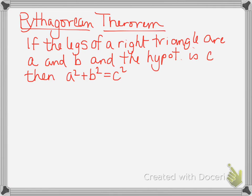So the Pythagorean Theorem states this: if the legs of a right triangle are a and b, and the hypotenuse is c, then a squared plus b squared equals c squared. In other words, if I have a right triangle, I can square the legs, add them together, and that will equal the square of the hypotenuse. So basically the 'if' part is: if I have a right triangle, it's going to have two legs and a hypotenuse, and then I have this relationship of a squared, b squared, and c squared.